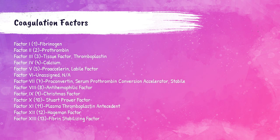Before I get into the different steps of the hemostasis process, I want to introduce the coagulation factors. These factors are proteins that are present in the blood that help in something we call the coagulation cascade — a series of steps the body does to stop bleeding caused by an injury. Each step activates the next, ultimately producing a blood clot. There are several coagulation factors you need to know. Memorizing them is doable — I recommend making flashcards or writing them down repeatedly until you know the factor number and name.